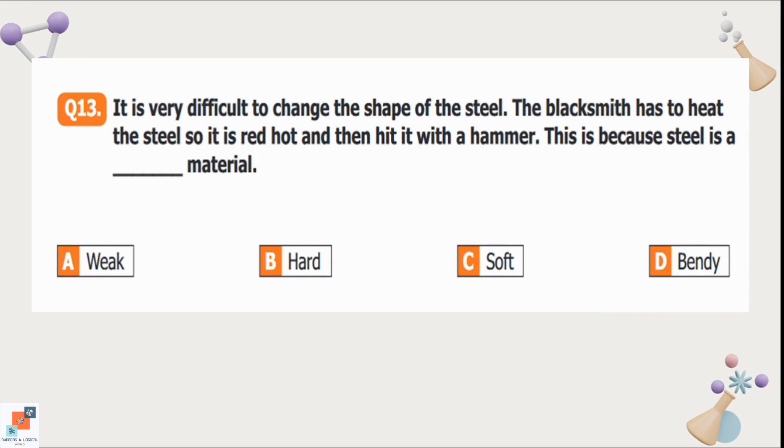Question number 13: It is very difficult to change the shape of steel. The blacksmith has to heat the steel so it is red hot and then hit it with a hammer. This is because steel is a blank material. Option A is weak, it means it can break easily. Option B is hard, like a material which cannot be crushed or cut easily. Option C is soft, a soft material is quite flexible or we can make scratches on it easily. And option D is a bendy material which is foldable. Steel is not weak, soft or bendy. It is a hard material. That's why we use this material to make cooking pots, utensils like spoons, forks and bumper of cars.